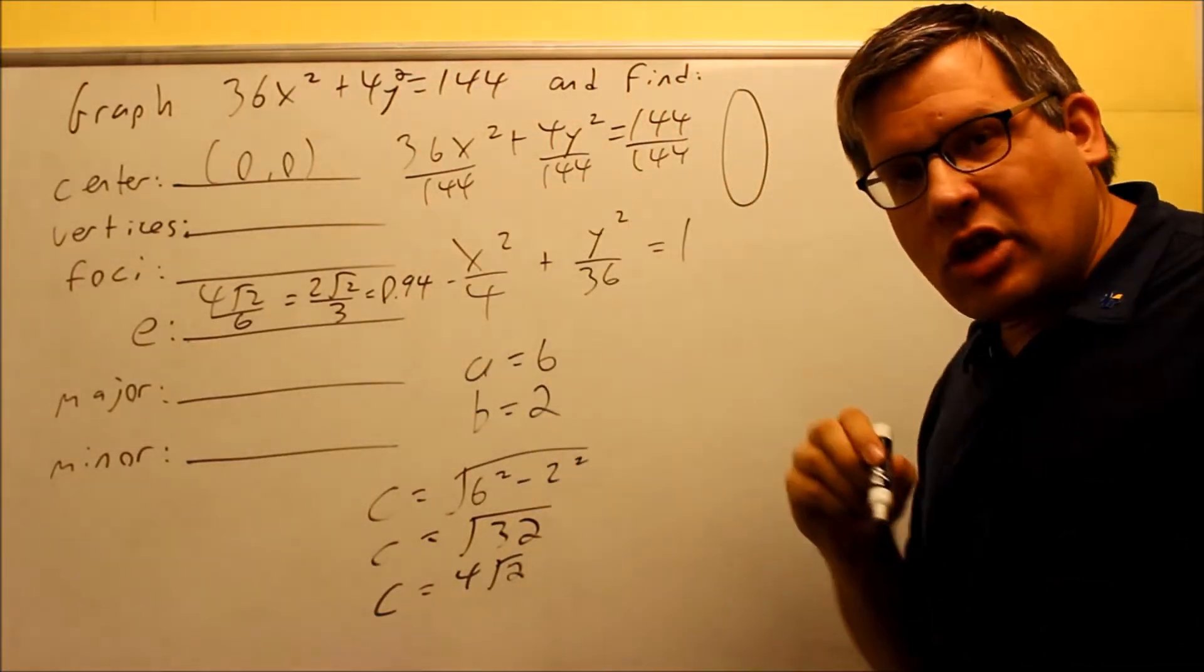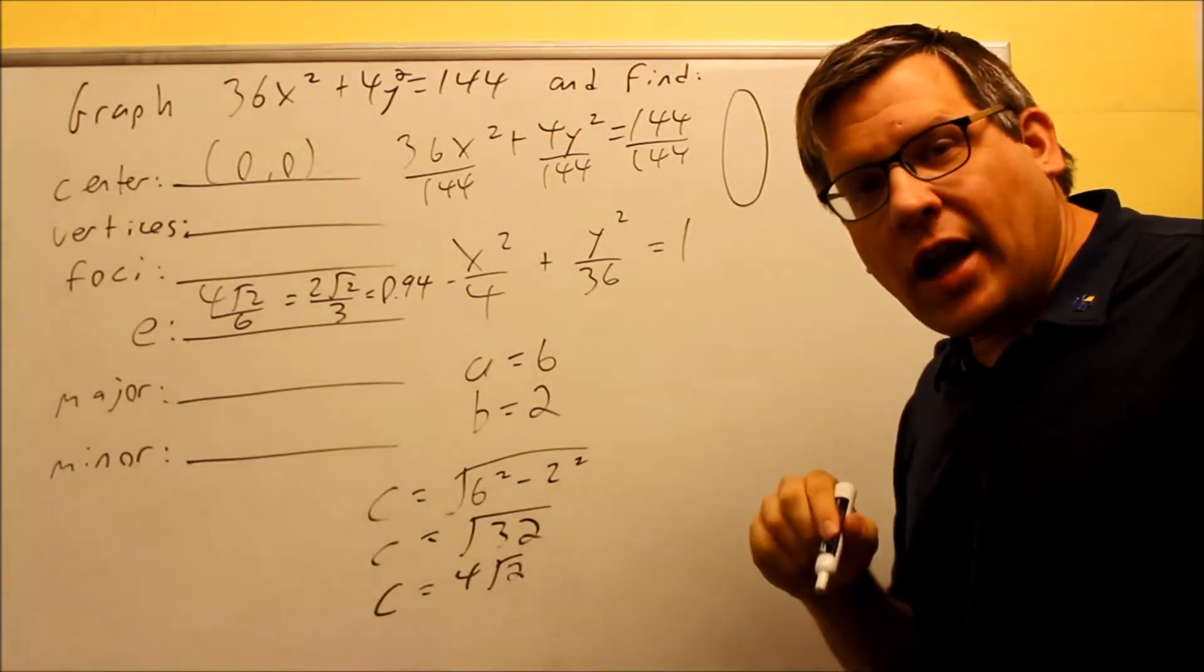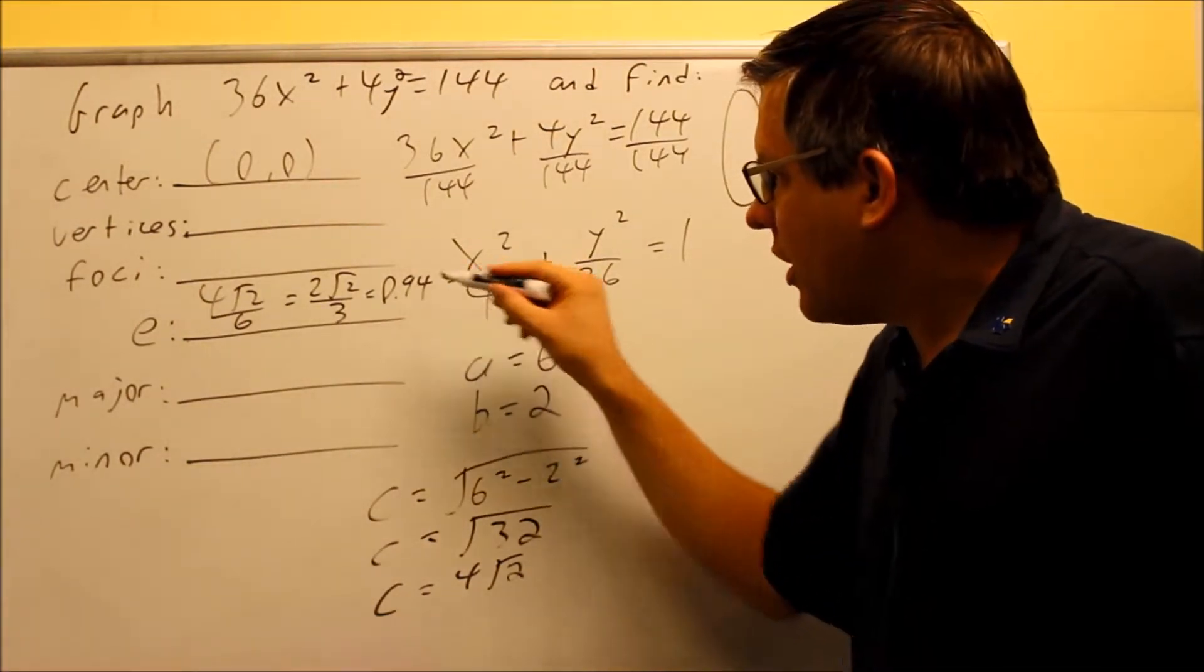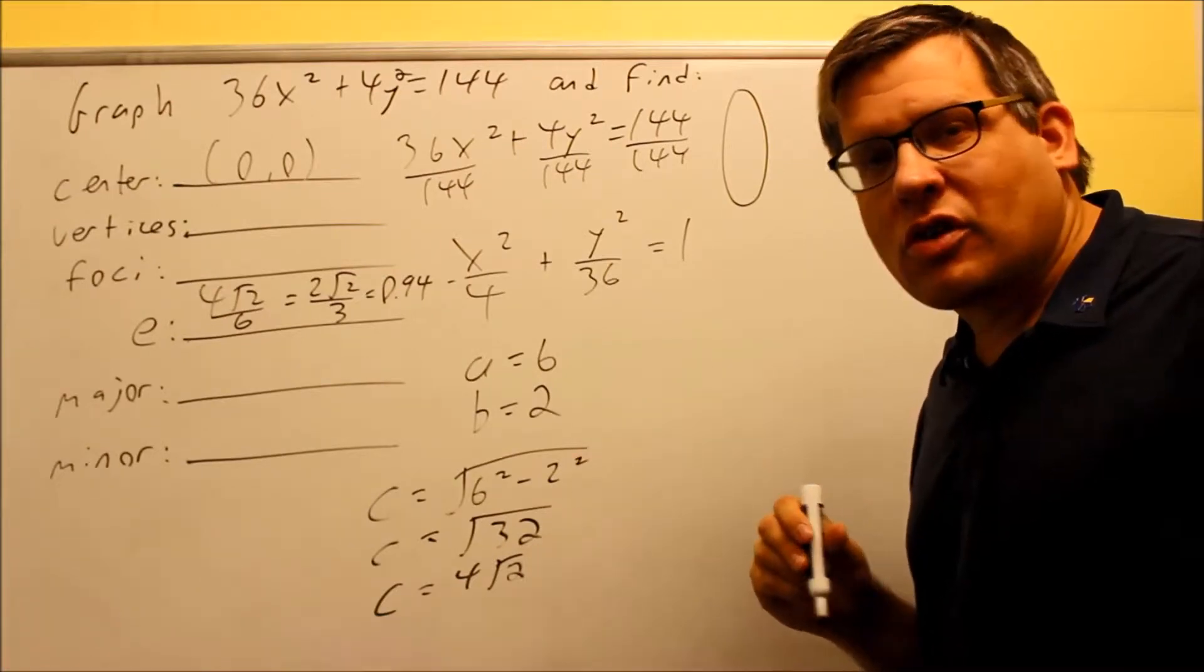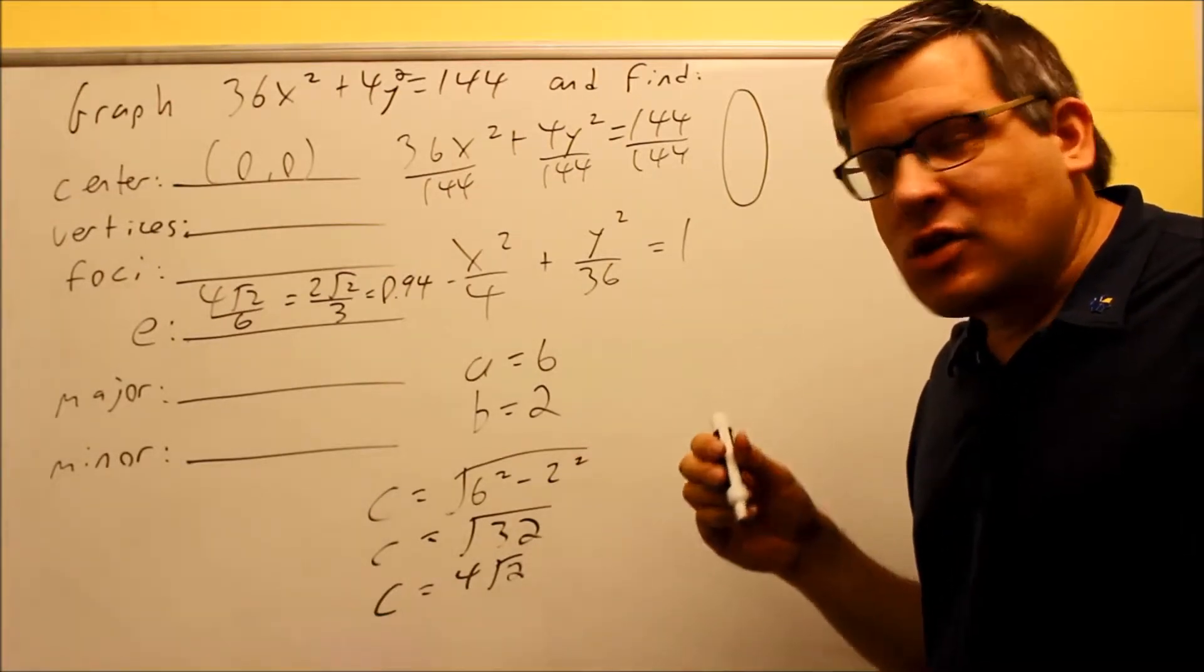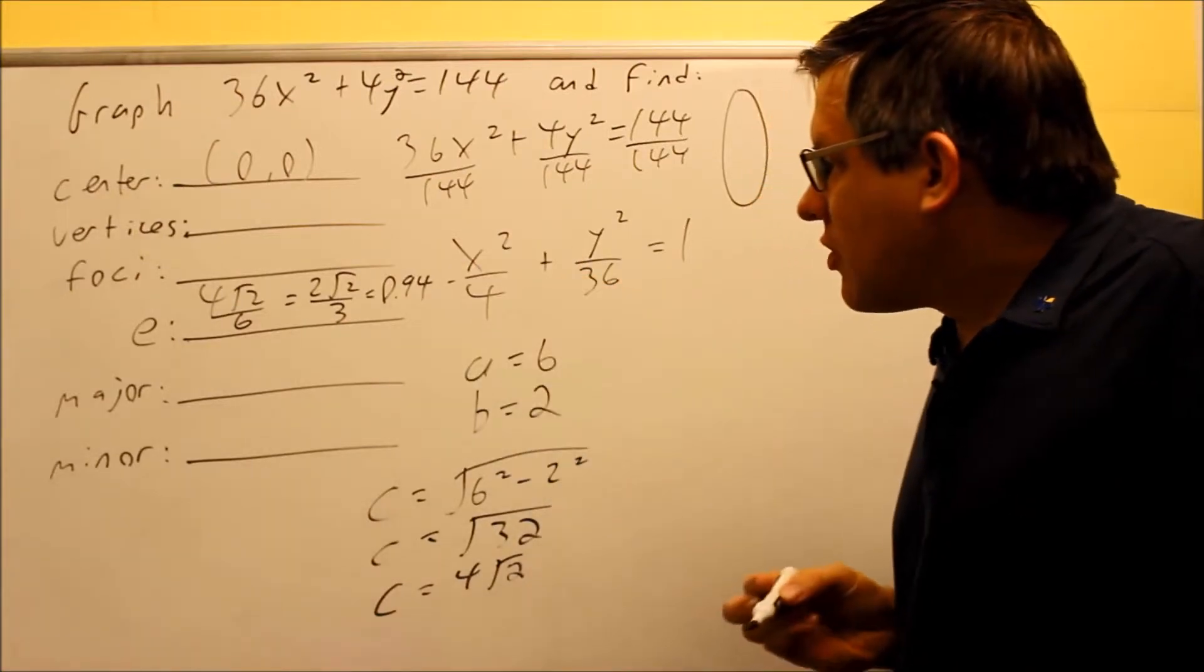So the last example, we had eccentricity was 0.8. So that means that 0.94, it means it should be a little bit more narrow than the one we did before. So it looks, again, not quite as rounded as the one because we had a larger eccentricity.